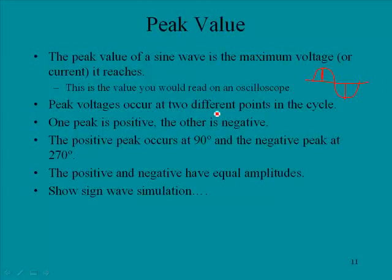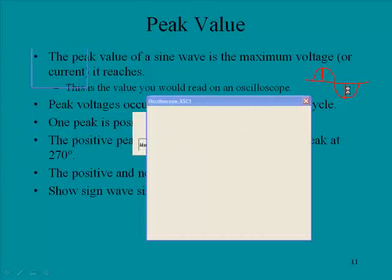Peak voltages occur at two different points in the cycle. One is positive, one is negative. The positive peak occurs at 90 degrees, and the negative at 270 degrees. The positive and negative have equal amplitudes, and we can quickly look again at our simulation.